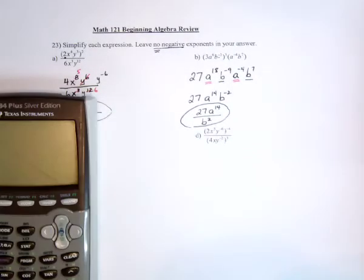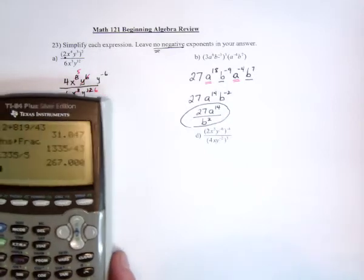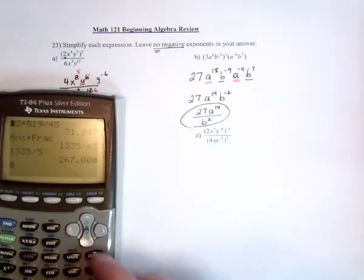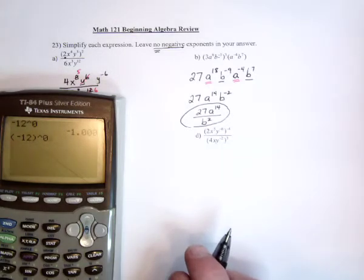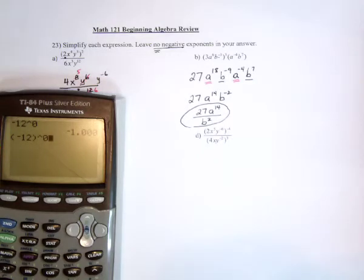You want proof? Let's see how smart the calculator is. If you take a negative 12, and raise it to a 0, yay, calculator, you're so smart. But see, if it had been put in parentheses, negative 12, raised to the 0, now this means, take the whole thing, the negative and the 12, raise it to the 0, that's going to equal a 1.